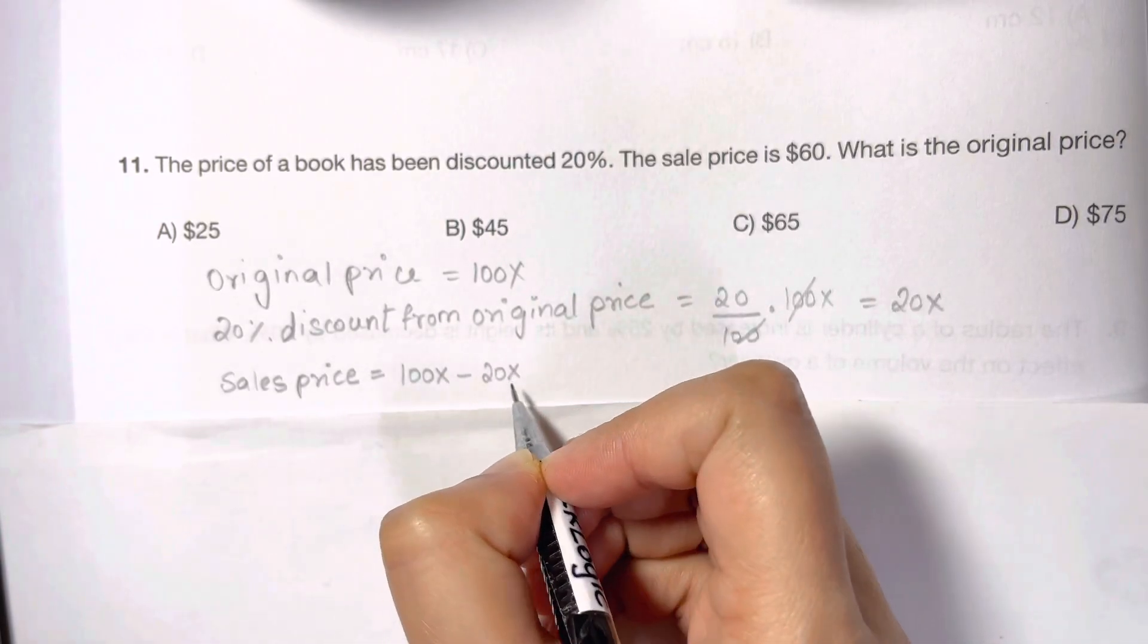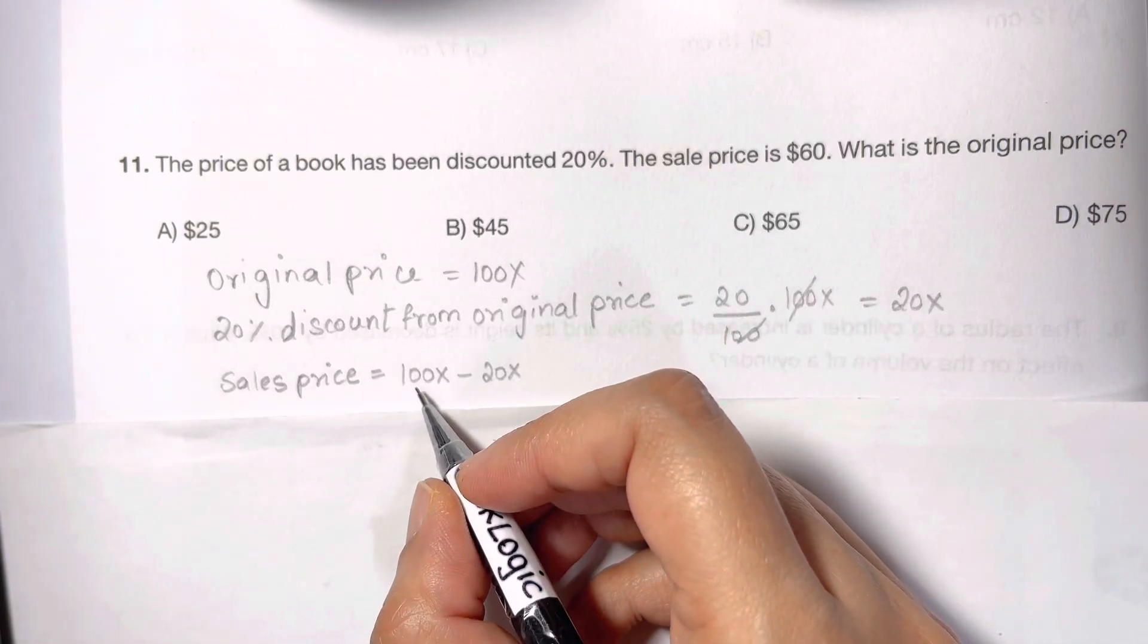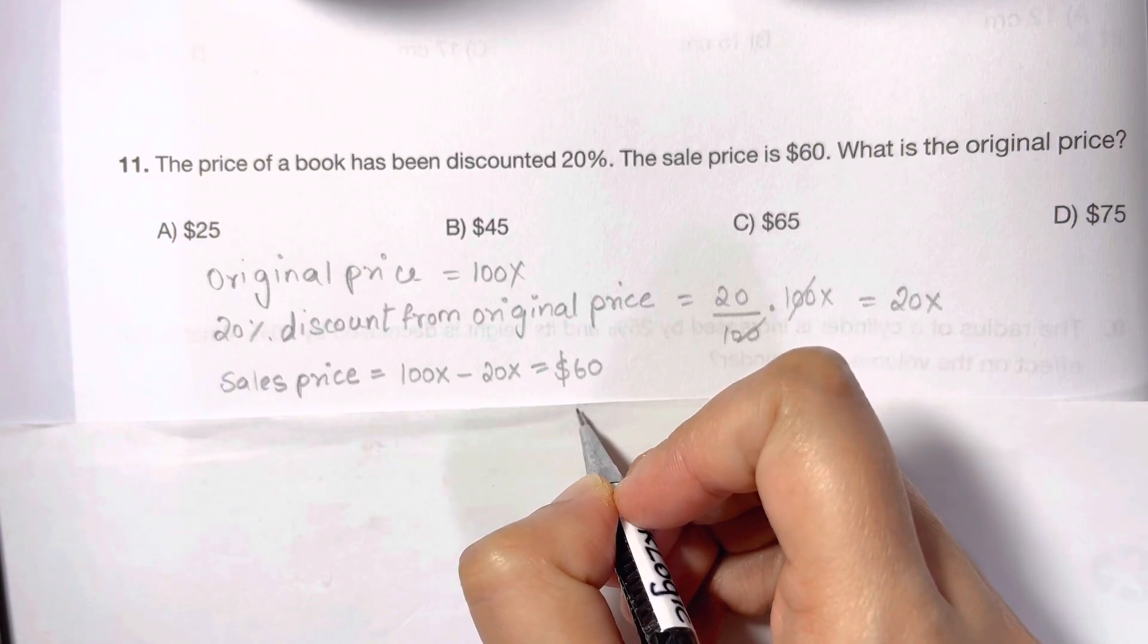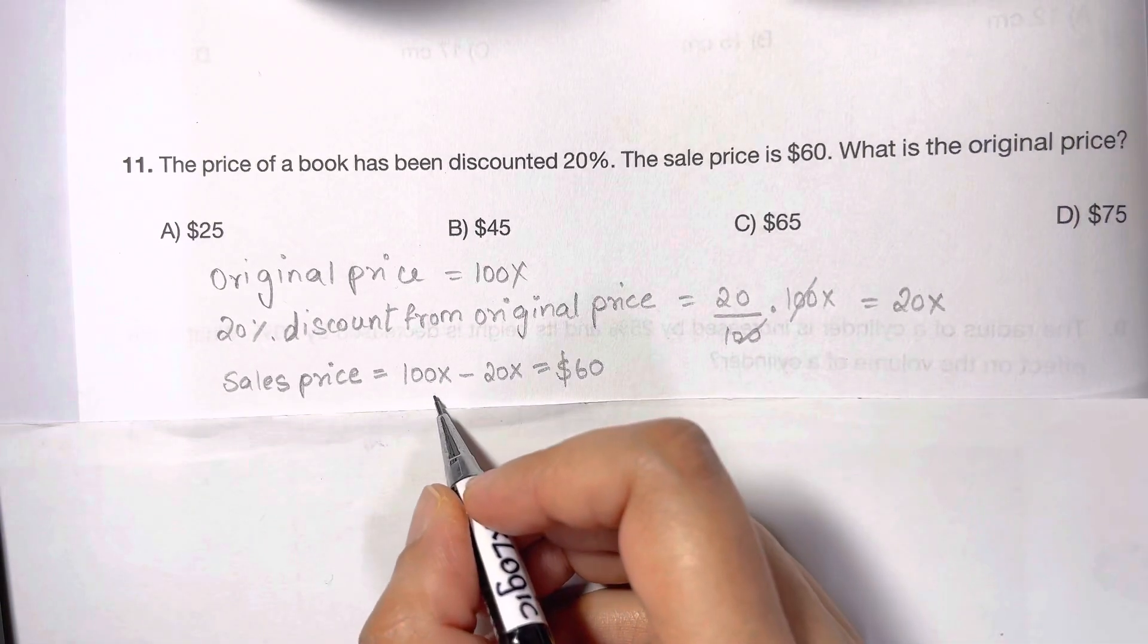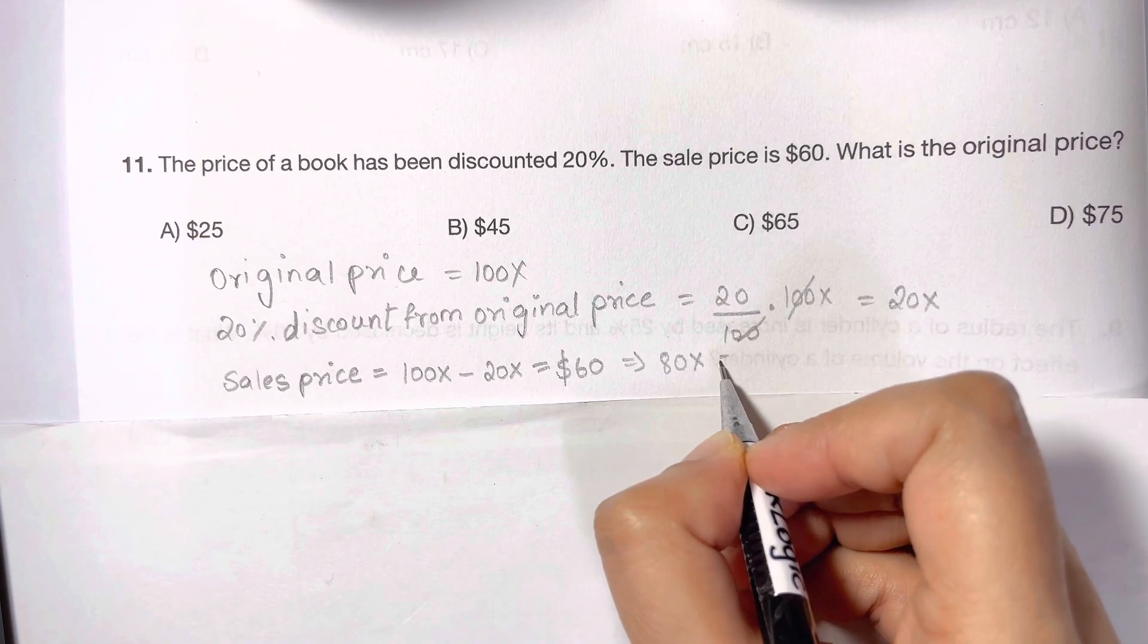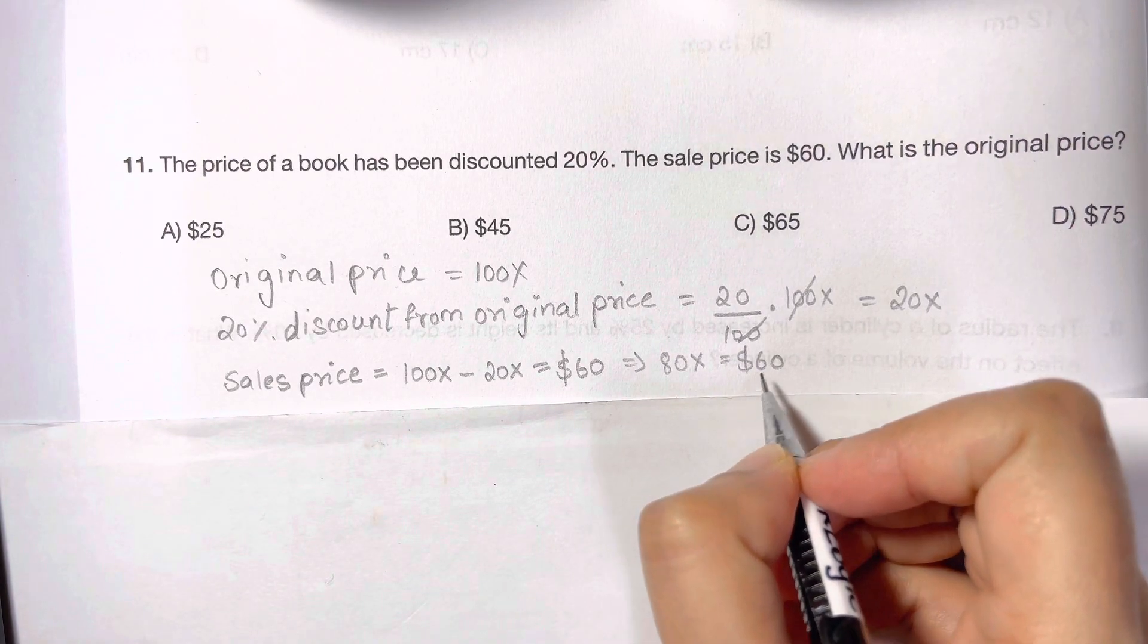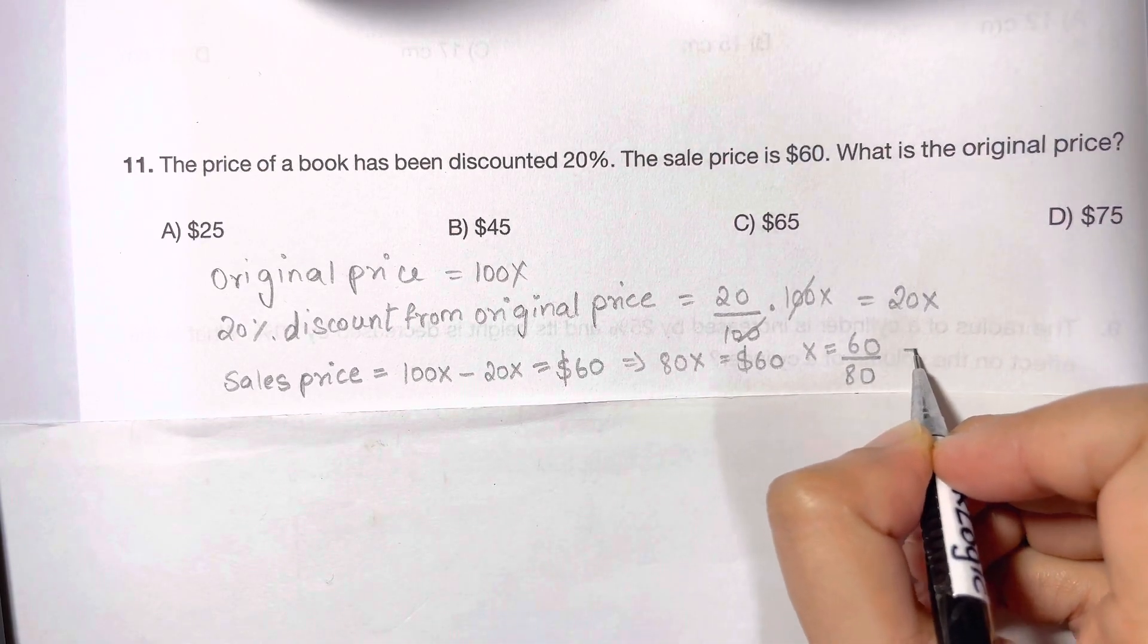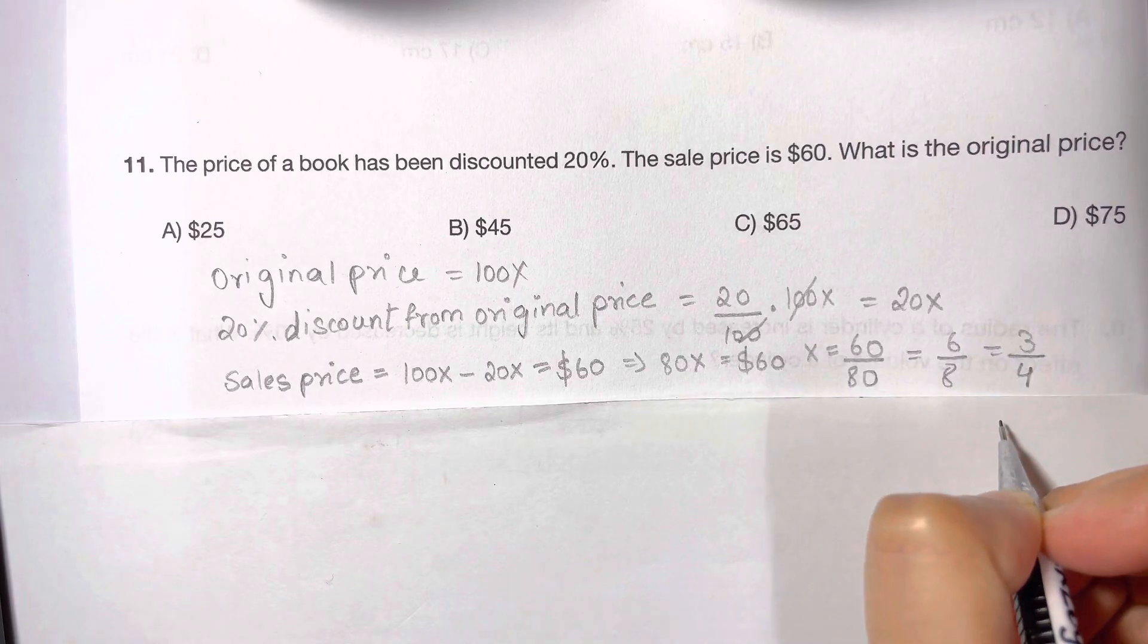Now 100x minus 20x equals 80x. So 80x equals $60. Let's find the x value: x = 60/80 = 6/8 = 3/4.